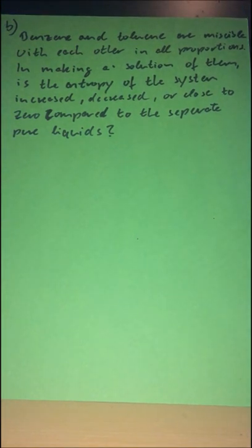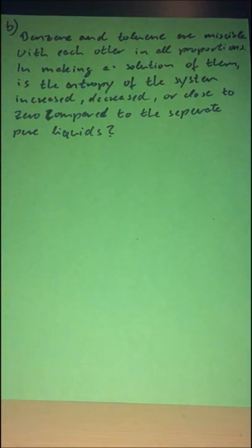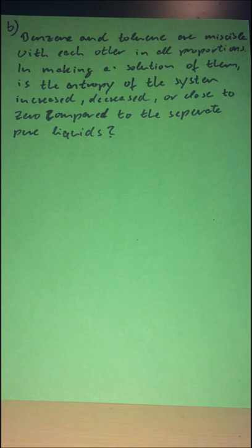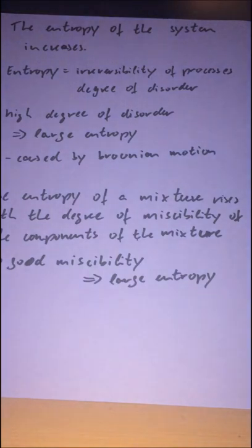So here we have the second part of the task. Benzene and toluene are miscible with each other in all proportions. In making a solution of them, is the entropy of the system increased, decreased, or close to zero compared to the separate pure liquids?